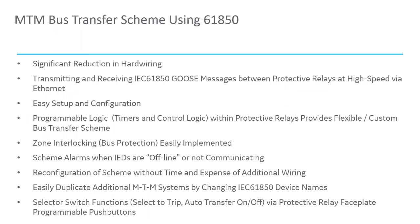The advantages of the main-tie-main scheme include significant wiring reduction, high speed, and constant monitoring of the communication. If a zone interlocking scheme is already implemented, you can easily add the main-tie-main scheme through relay settings, and vice versa. With that, we'll open up for questions.